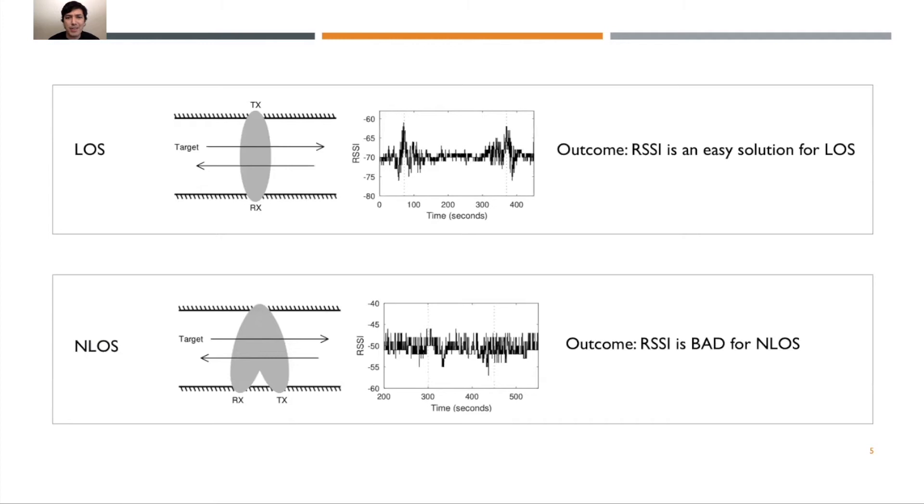At the top of the slide, we're considering the line of sight experiment. We can see if we look at the RSSI response as time goes on, two distinct peaks appear. They're marked with a dotted line to indicate when the target was walking past the line of sight. The outcome is we can use RSSI to easily detect line of sight movement.